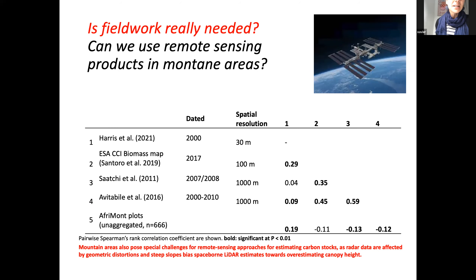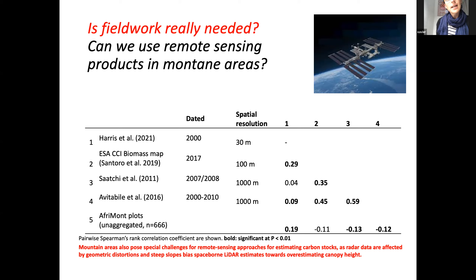People sometimes ask whether field work is still needed given advances in remote sensing, LiDAR, and drones. We compared our plot data with four different biomass map products using different methods at different resolutions, and the correlation was actually quite low. Using remote sensing in mountain areas is particularly challenging because of steep slopes — for example, LiDAR tends to overestimate canopy height. Field work will definitely still be needed for quite a long time in these areas.